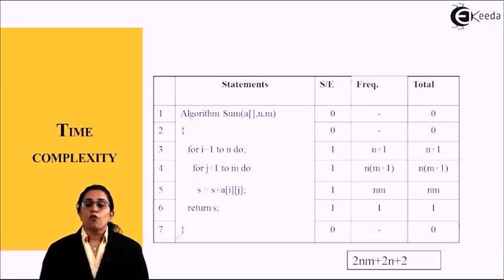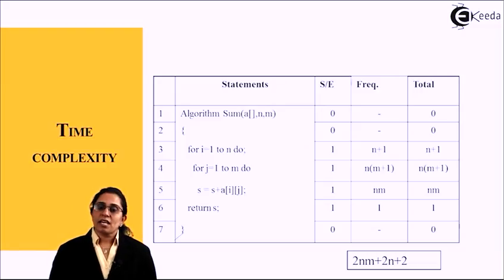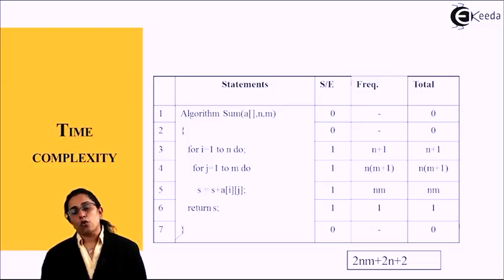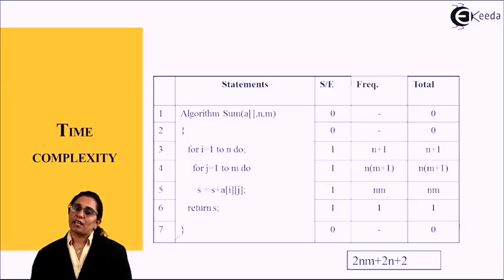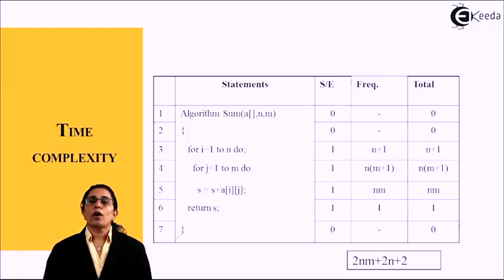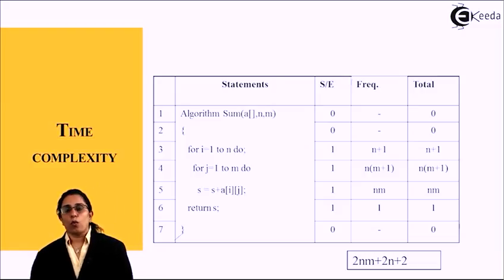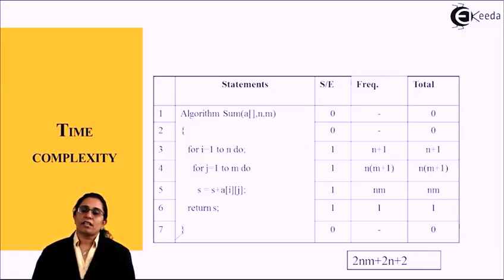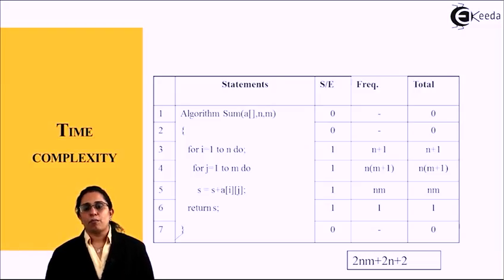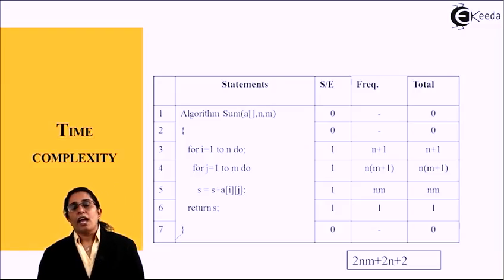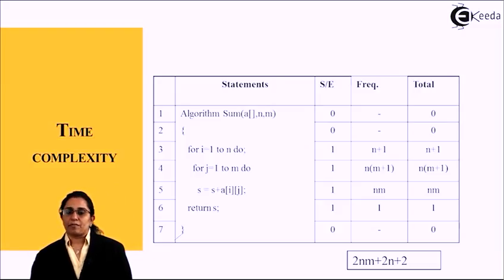For the two for loops: for i = 1 to n, the frequency is n + 1, so the total time complexity is n + 1. For j = 1 to m, the frequency is n(m + 1). The assignment statement s = s + a[i][j] is executed n * m times.